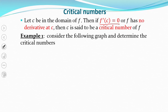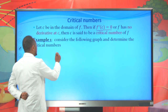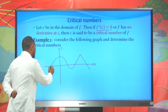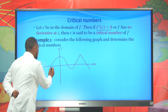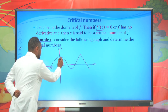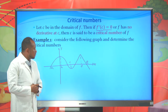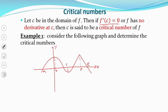Consider the following graph and determine the critical numbers. We have this graph with different points. Assume this point is A, this point is B, this point is C, this point is D, and this point is E. From these points, which ones will be the critical numbers for this function F of X?